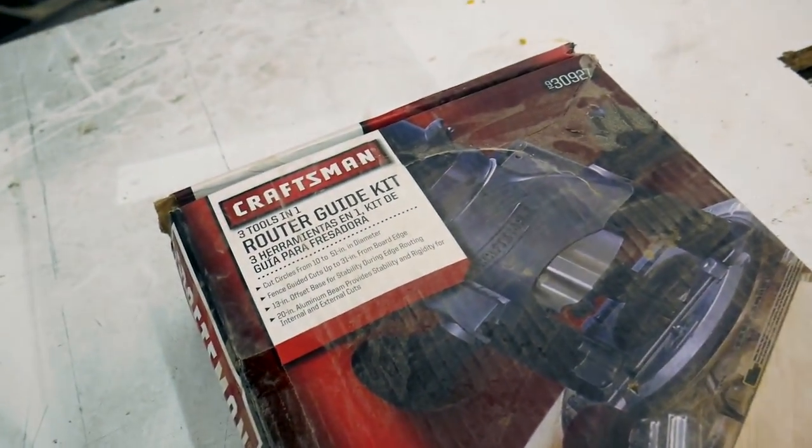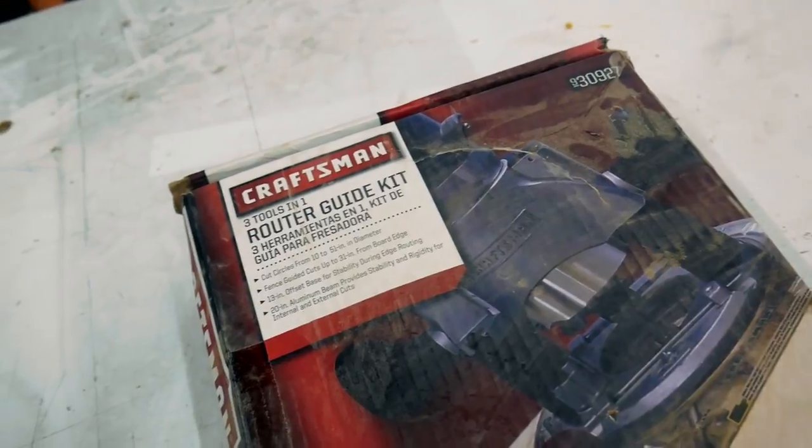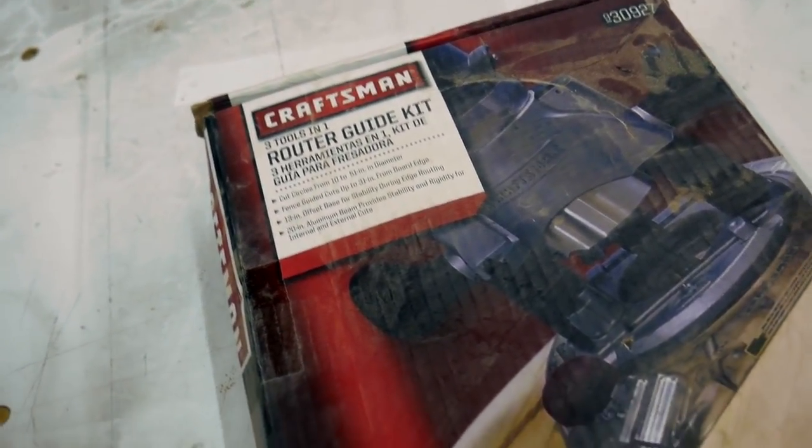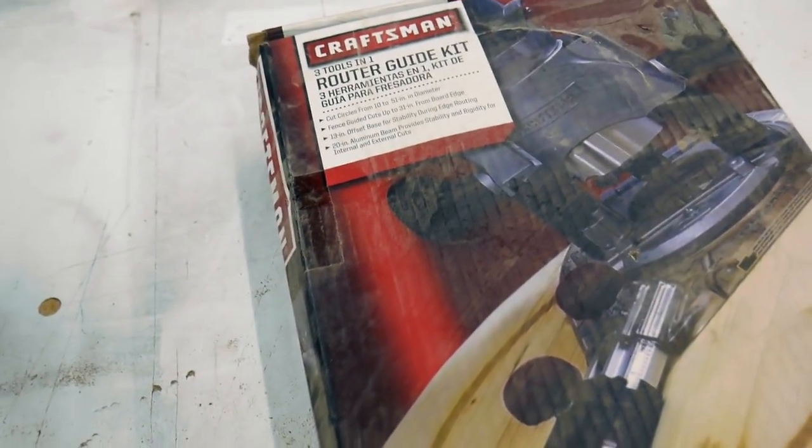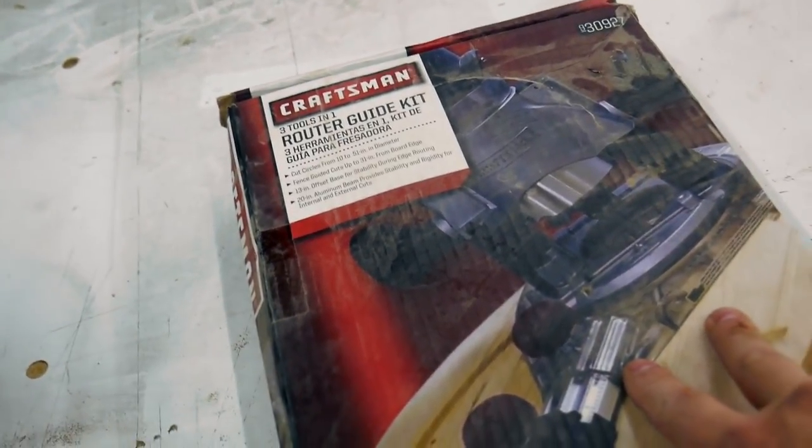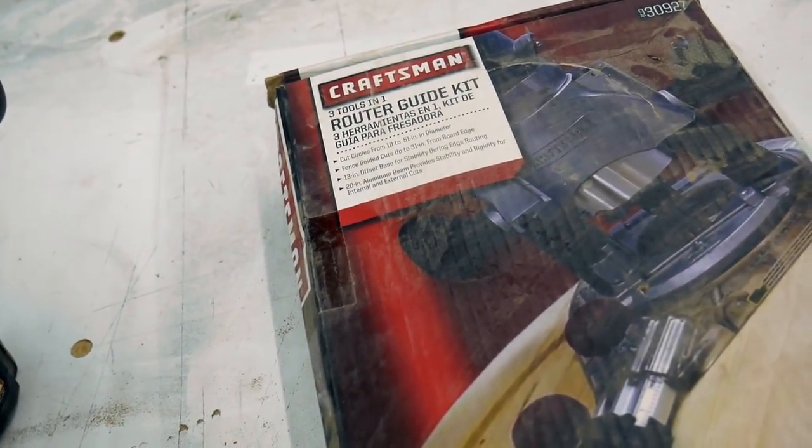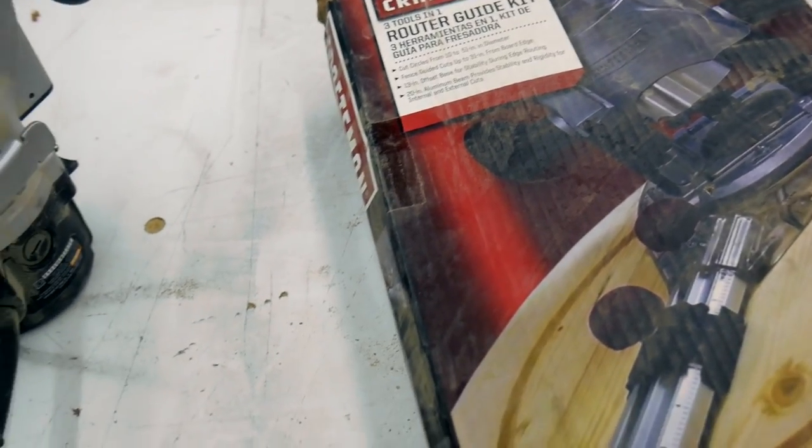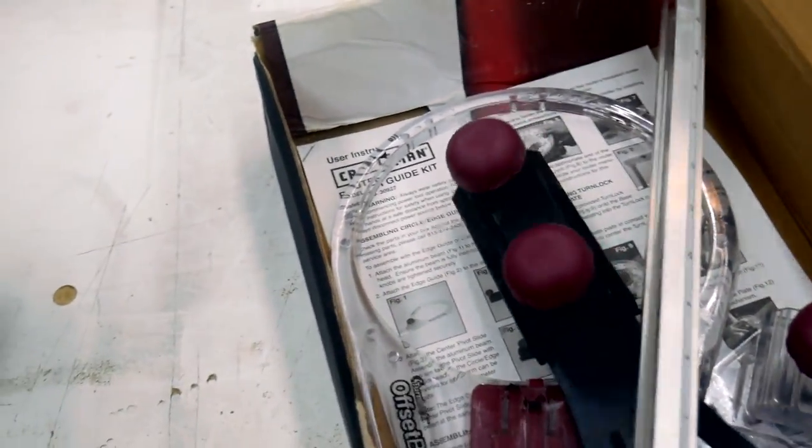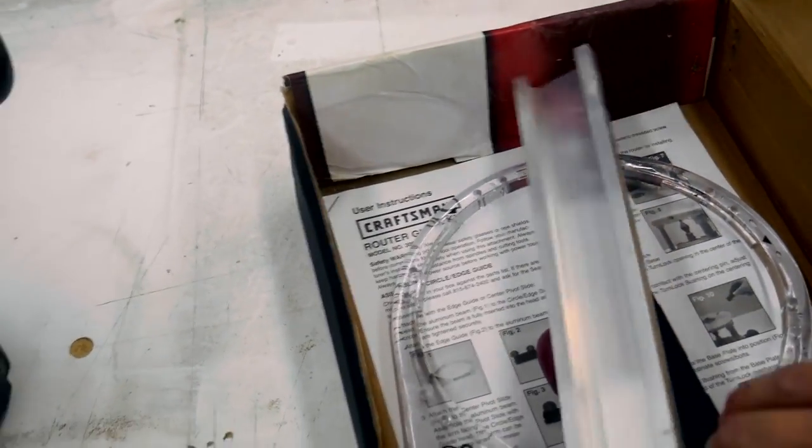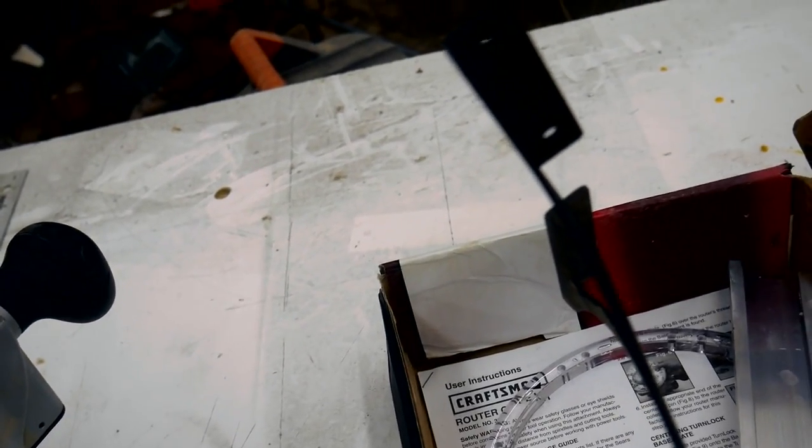A long time ago I picked up one of these router guide kits and I never really did anything with it. I know you can build a circle jig real easy for a router but I bought this at one of those Sears that was going out of business and I think it was like ten bucks. It looked like it was a return, it was all taped up and everything is here but there is an edge guide that comes with it and you can see that the edge guide is a little beat up.